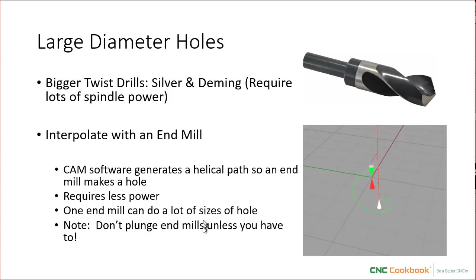One other thing I want to mention: don't plunge your end mill straight down to make holes unless you have to. One reason you might have to is you're trying to create a blind hole with a flat bottom — twist drills have a conical pointed bottom, while an end mill is flat on the bottom. But end mills are much less efficient at plunging to make holes; it's really hard on them, and it's just better in general to use a twist drill instead of an end mill if you're just going to plunge to make a hole.